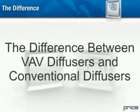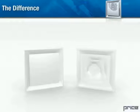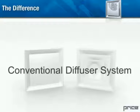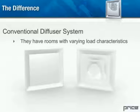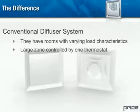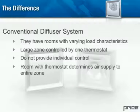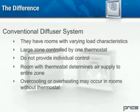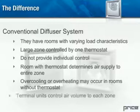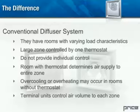The difference between VAV diffusers and conventional diffusers. Here are some characteristics of conventional diffuser system layouts: They have rooms with varying load characteristics, large zones controlled by one thermostat, do not provide individual control, room with thermostat determines air supply to entire zone, overcooling or overheating may occur in rooms without thermostat, and terminal units control air volume to each zone.